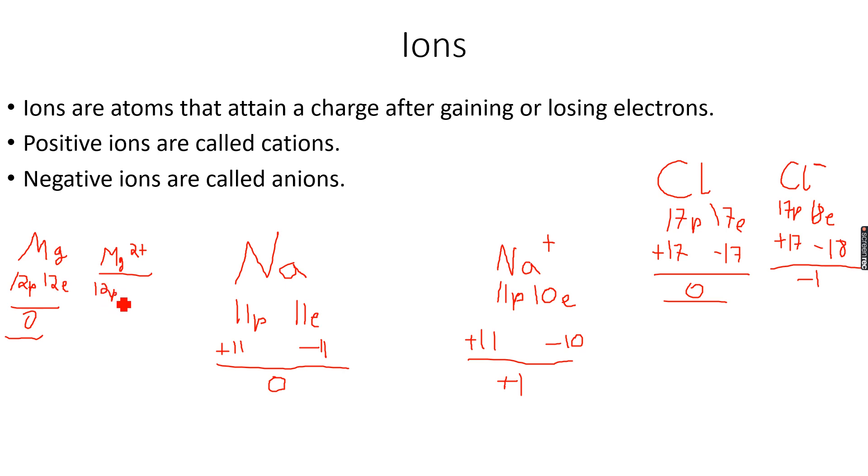But it releases 2 electrons, so now it has 10 electrons. Sodium releases 1 electron while magnesium releases 2 electrons. So we have +12 because of the protons, -10 because of the electrons. When we add these two together...